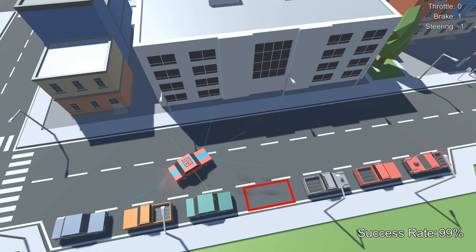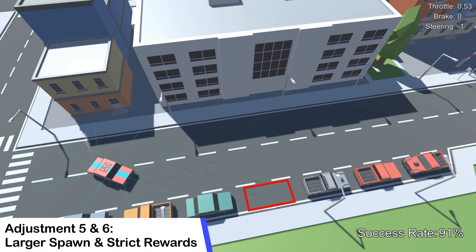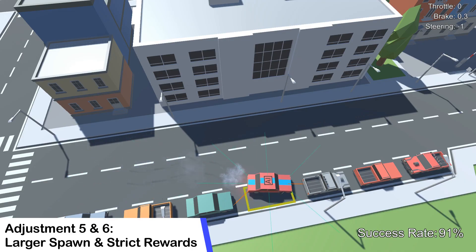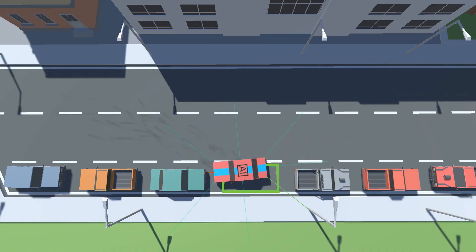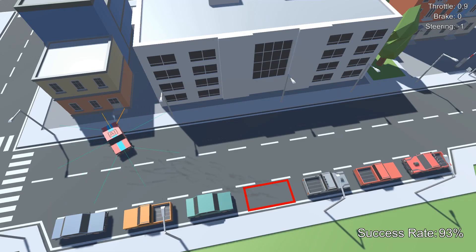At this point I felt comfortable enough to also increase the spawn area to include the entire road. But I still wasn't quite happy with the parking position of the agent, so I also made the final reward a bit more strict, both in respect to the positional as well as the angular difference to the parking spot. The increased difficulty of the larger spawn area actually led to the agent being less precise, but hey, it's still able to park somewhat consistently.